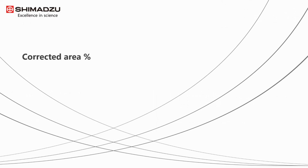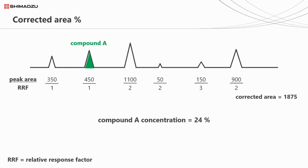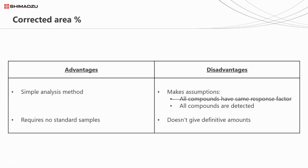One way of improving its reliability is to use what's known as a corrected area percent. In this variation, we divide the peak areas by the compound's relative response factors, to account for the fact that some components give higher responses than others for the same quantity of compound. In this situation, the corrected area gives us a value of 24%. The only difference with this method is that we remove the assumption that all components have the same response, but the other disadvantages of area percent also apply.